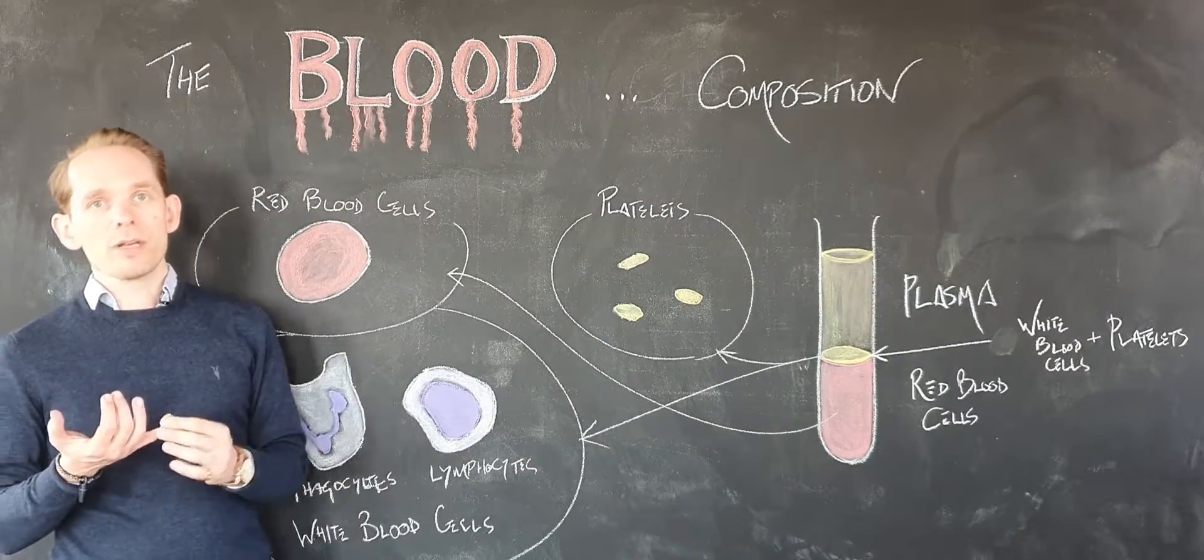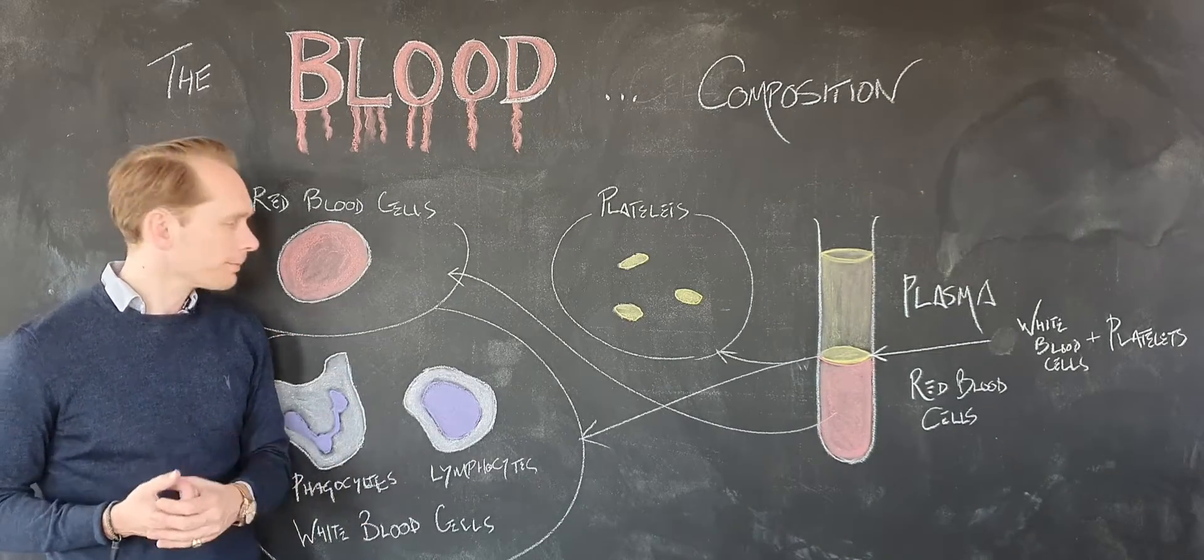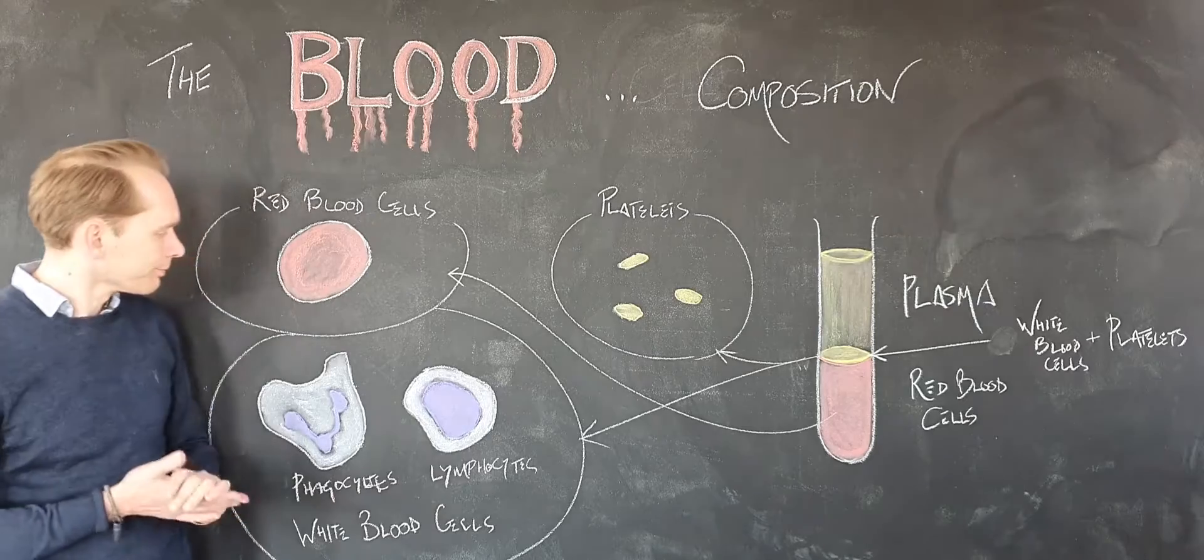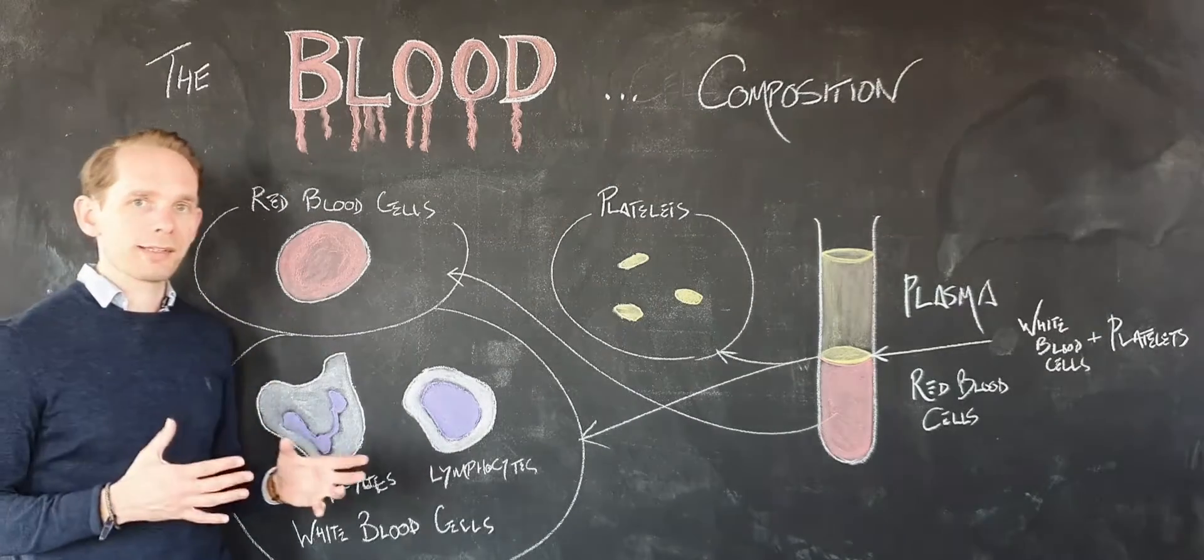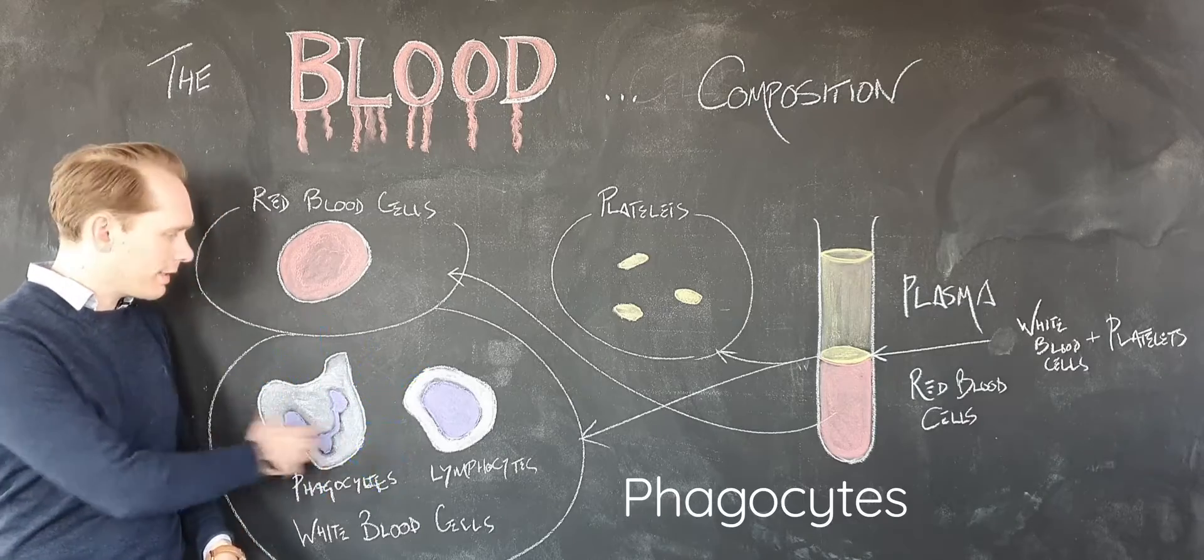What they do is they fight disease for us. They destroy pathogens that enter the blood or any foreign objects, and there are a couple of different ways they do it. There are two main types you need to know about: phagocytes and lymphocytes.